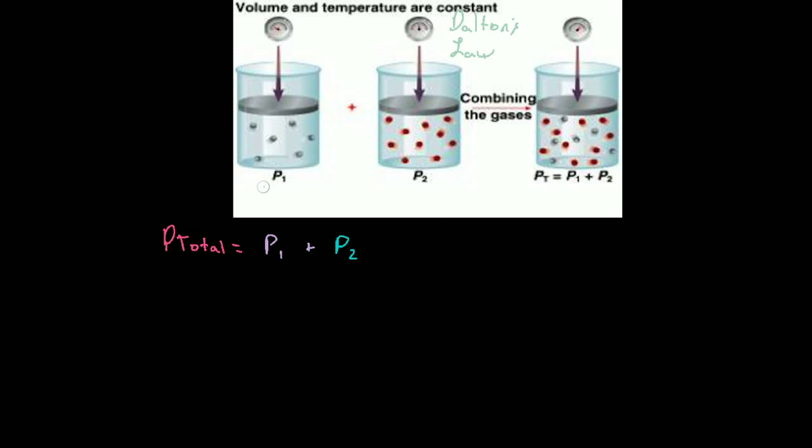So basically what this is saying is that partial pressure two here plus partial pressure one over here are equal to the total pressure. In this illustration you can see it's taking these red molecules with these silver molecules, adding them together and saying that the pressure of this plus the pressure of that is equal to the total pressure of adding them both together over here.